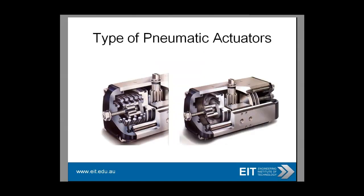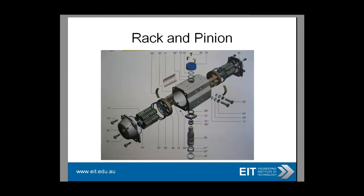Rack and pinion actuators give a constant high torque, have minimum hysteresis losses, their stroking speed is relatively high, and they are easy to assemble and maintain. You can see where the rack and pinion comes in on the inside — as that rotates, it operates the valve. It does not work well with dirty or moist air because those little O-rings get damaged very easily, so you have to protect them at all times. The O-rings are marked in blue and green on the screen.